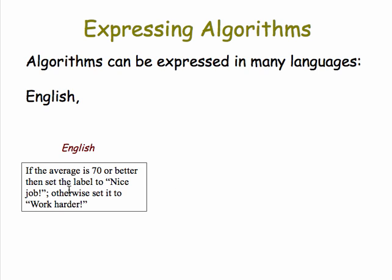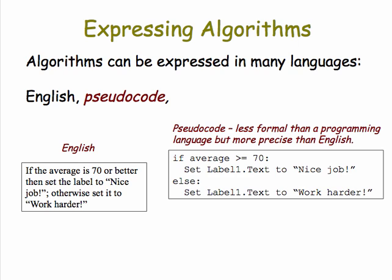The problem with English and other natural languages is they are not very precise, as we saw in some of those jokes. So, we sometimes use an intermediary language called pseudocode, which is somewhere between English and high-level programming languages. So, here's an example of something that could be English-like, but is more precise than just plain English. We call those pseudocode, and we'll be giving you examples of these as we go on.